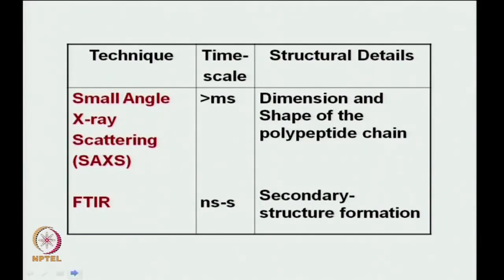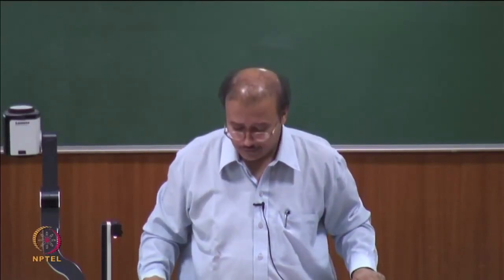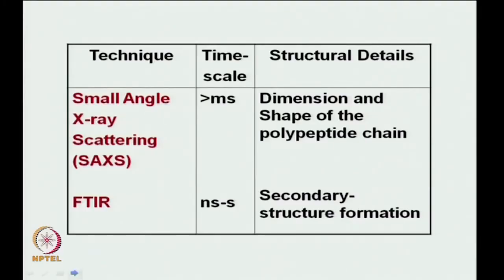FTIR, or Fourier transform infrared spectroscopy — you may have done IR spectroscopy in physical chemistry practicals. Proteins have characteristic IR absorption bands; for example, 1631 cm⁻¹ for an alpha helix, as discussed in the context of laser-induced temperature jump. Taking FTIR gives information about secondary structure. The time scale for FTIR is nanoseconds to seconds.